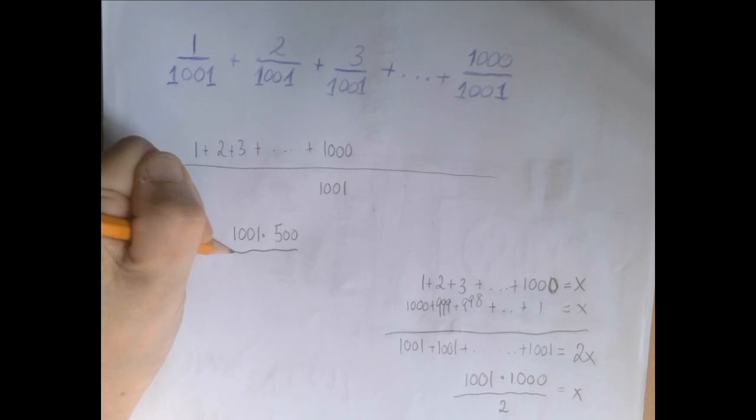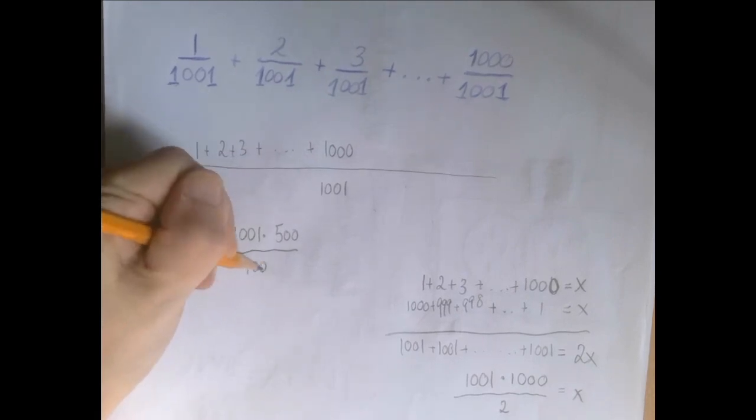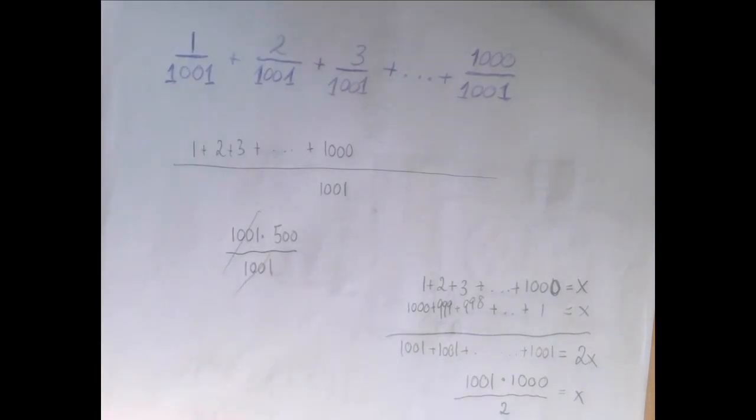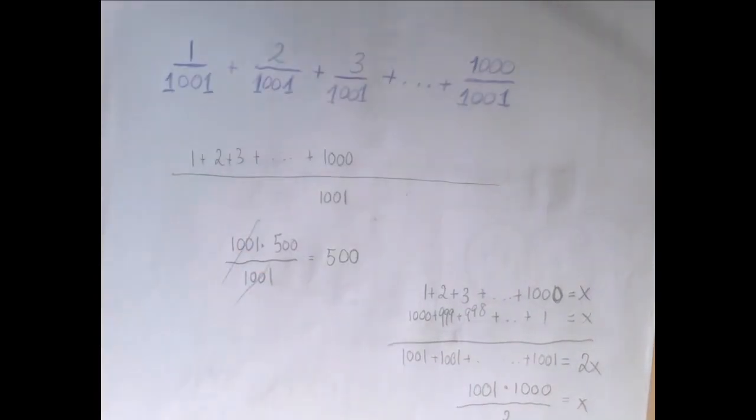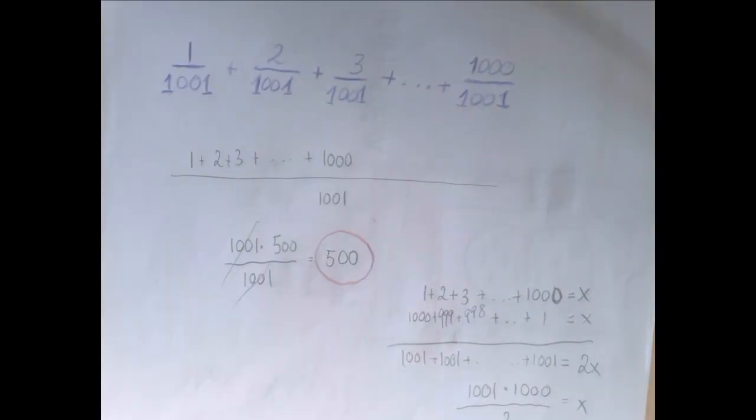And that's useful because if we have 1001 times 500 divided by 1001 we have this lovely cancellation. And so this long long sum is 500. Thank you for watching.